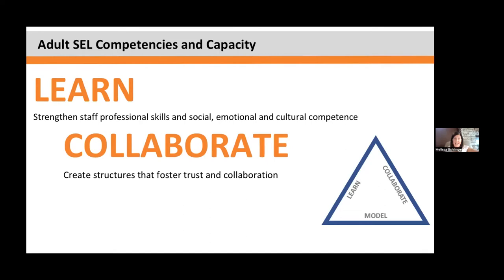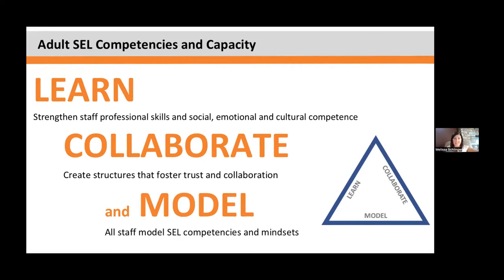The third piece is modeling — modeling SEL competencies, mindsets, and skills throughout our interactions with students, families, community partners, and each other. Students are always watching our behavior and interactions. We want to practice explicit modeling where we're being instructive, for example saying out loud: 'I am feeling frustrated right now, so I'm going to take a deep breath so I don't lose my temper in this moment.' You can learn more about CASEL's adult SEL framework of learn, collaborate, and model by visiting our guide to school-wide SEL.